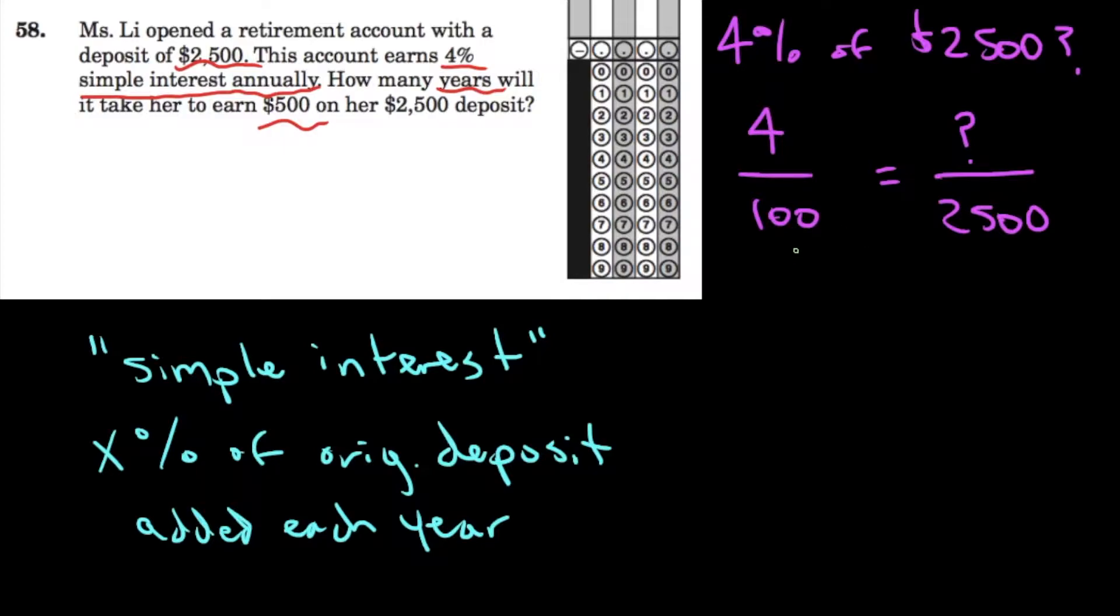Okay, 100, that's just multiplied by 25 to get 2,500. This is a 25 with two zeros after it. So if I do the same thing to 4, I'll know what 4% of 2,500 is. 4 times 25 is 100. So that is our mystery value.